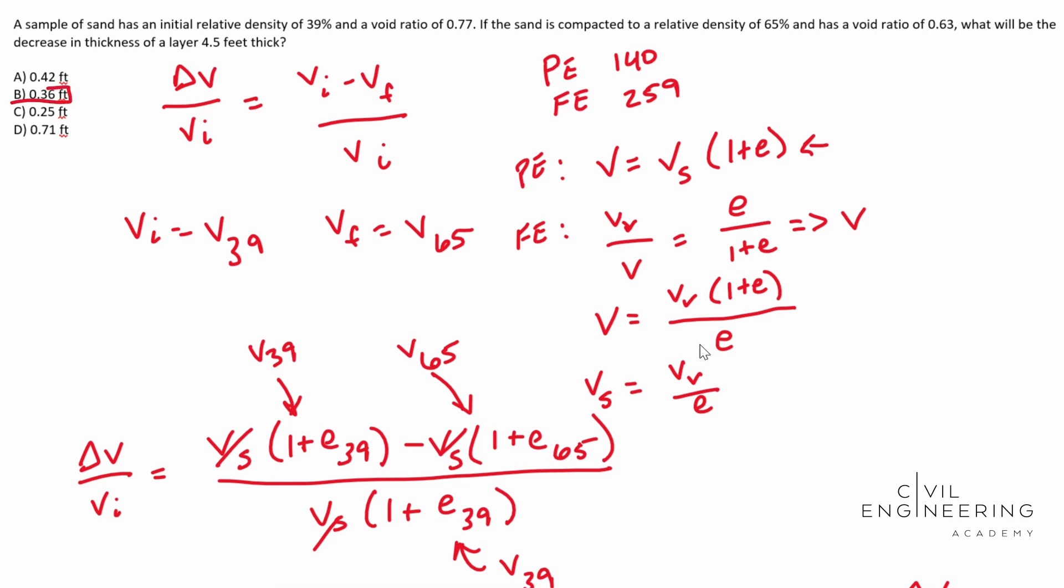And again, the way that we knew how to use this equation, right? The reason why we knew to use this relationship is because it gave us a lot of hints in the problem. It gave us a relative density. It gave us a void ratio. Hope this video helps and we'll catch you next time.